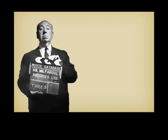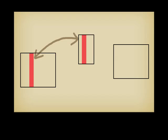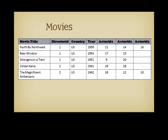Instead of having one column per director or actor in the movies table, a DBMS allows us to have an intermediate table that, through two joins, will allow us to relate one director to several movies, or several directors to one movie if need be. We shall call this table DirectedBy, and it implements the link between the table of movies and the table of directors. The director and the leading actors will no longer be an attribute of the movie.